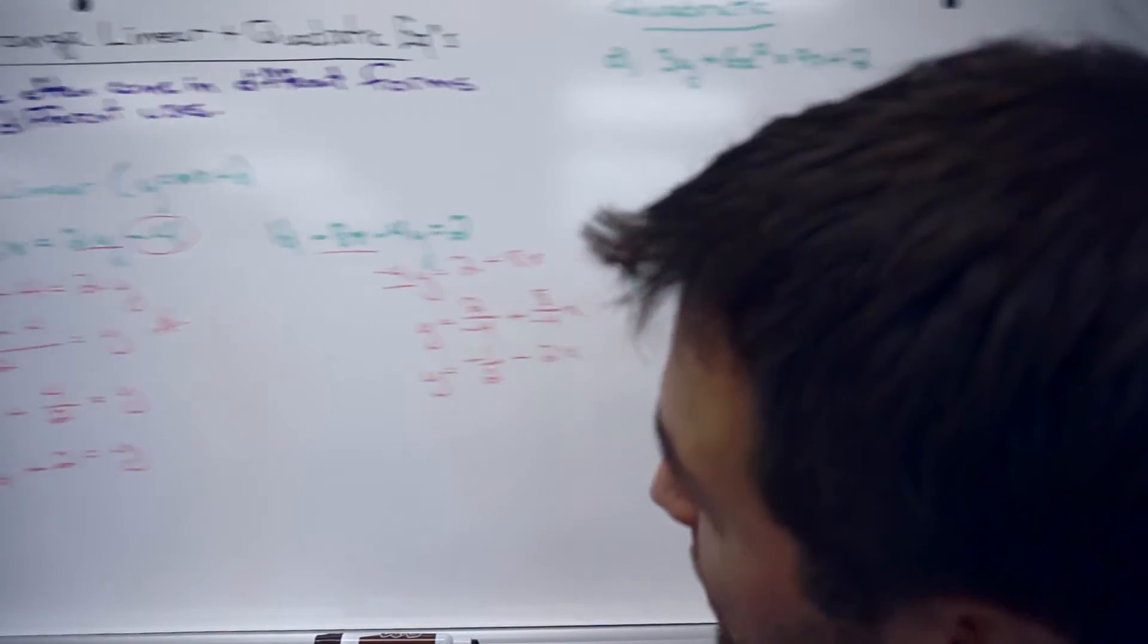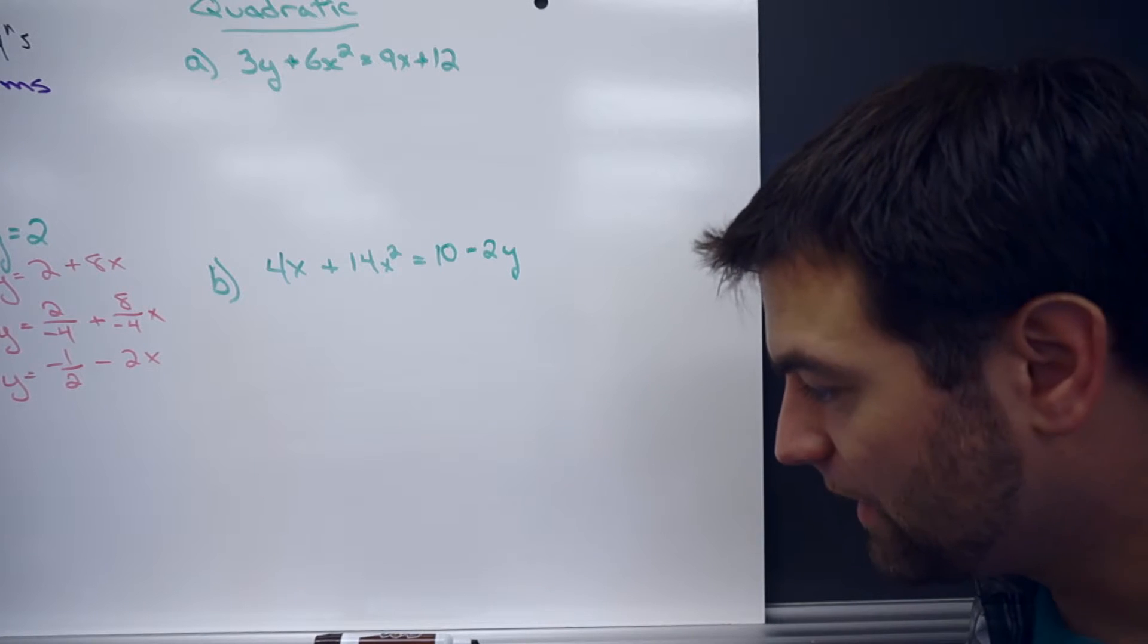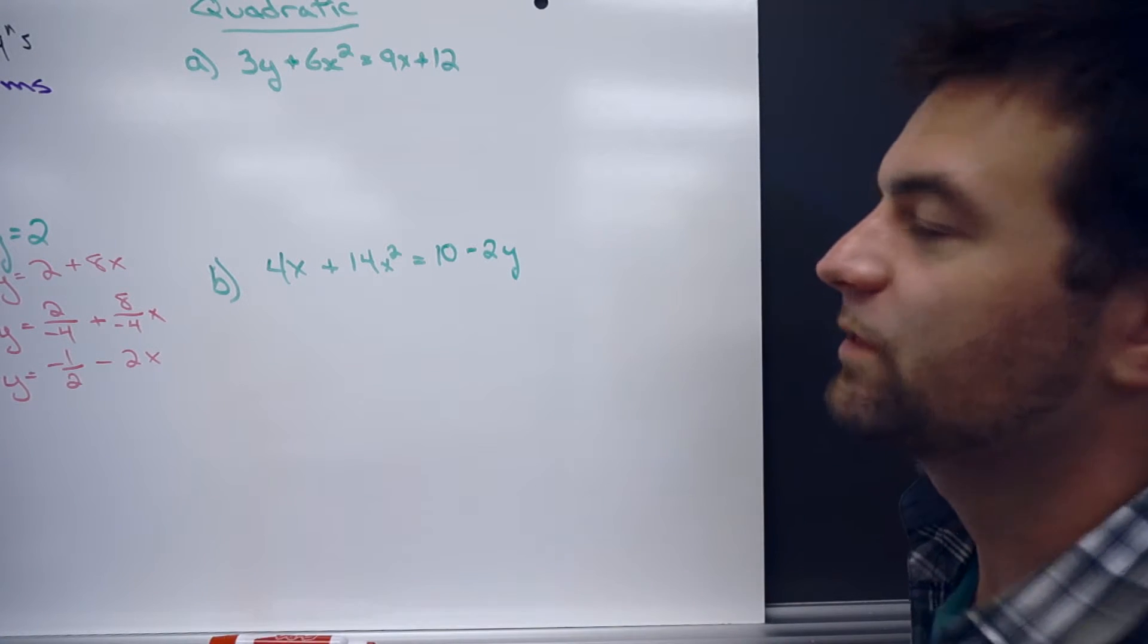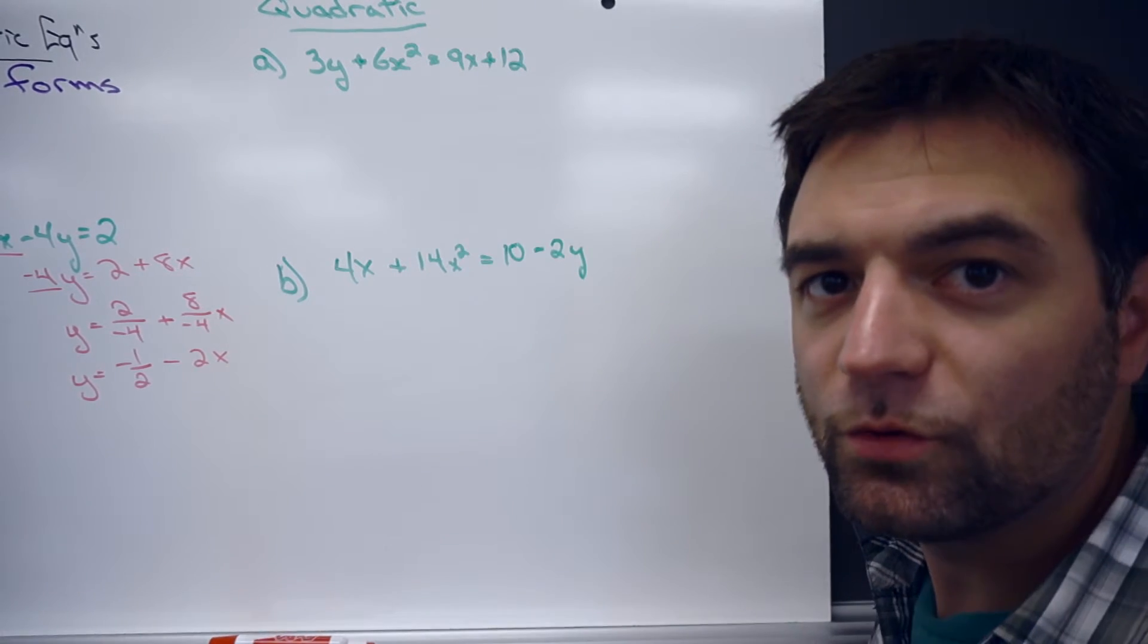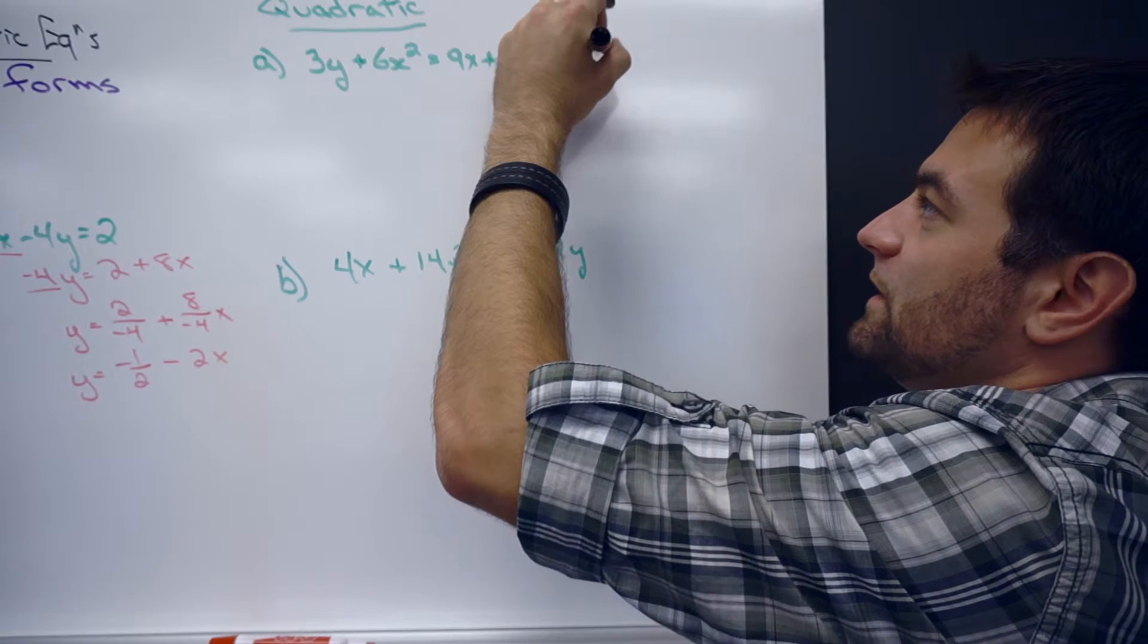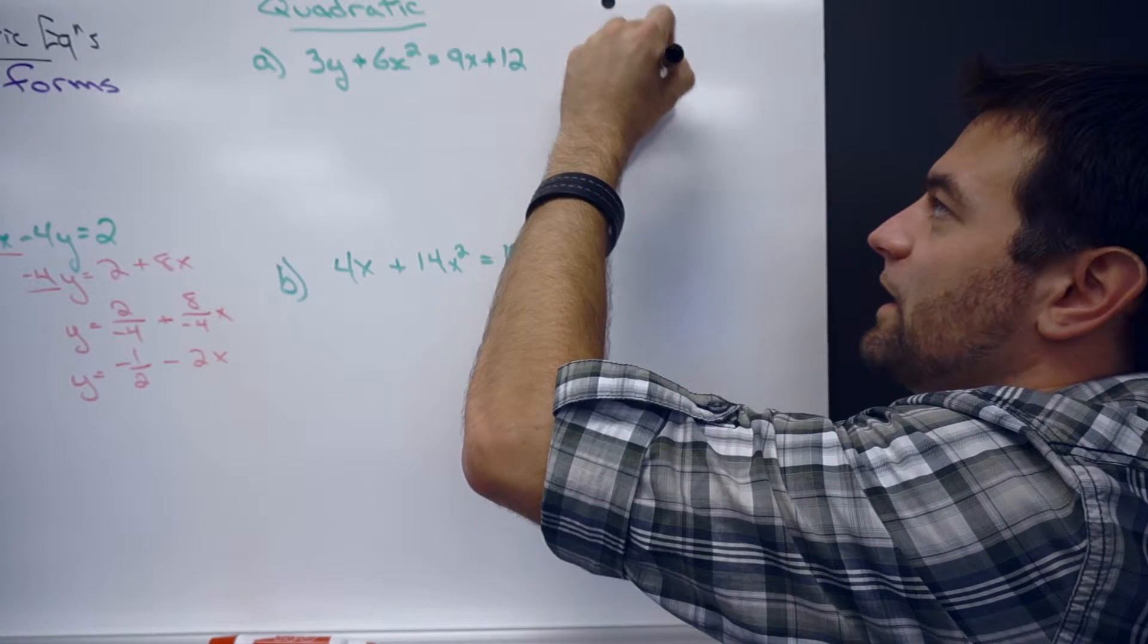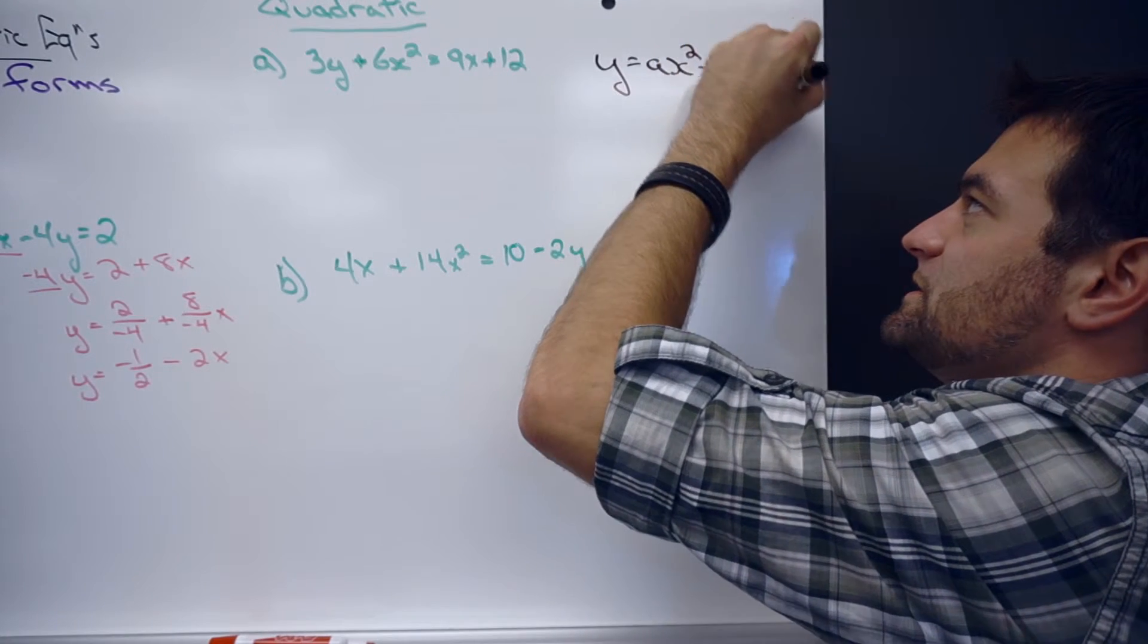Now, when we move over to the quadratic, this is going to be a little new. We won't go too in-depth with it. But the basic idea here is that with quadratics, you have a general form that looks like this: y equals ax squared plus bx plus c.